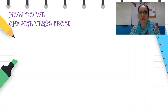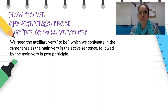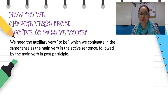How do we change verbs from active to passive voice? We need an auxiliary verb 'to be', conjugated in the same tense as the main verb in the active sentence, followed by the main verb in past participle. To be simple: 'to be' in the tense of the active sentence, plus the past participle of the main verb. 'To be + past participle' is the simple formula.